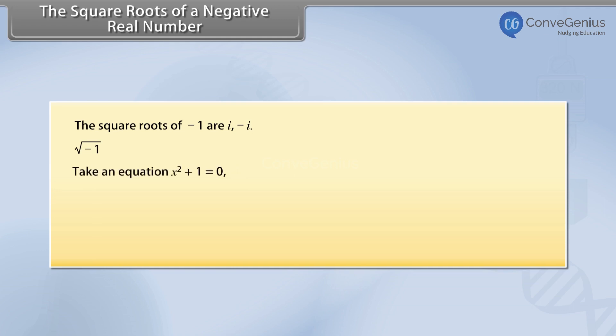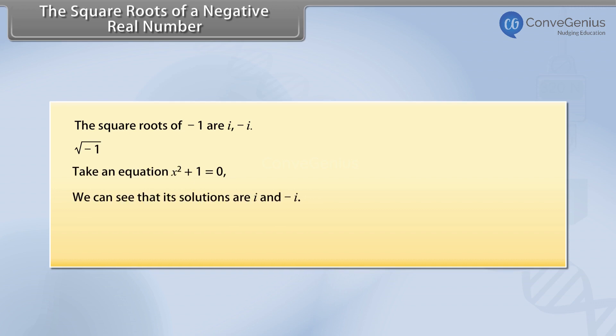Take an equation: x squared plus 1 is equal to 0. We can see that its solutions are iota and minus iota.